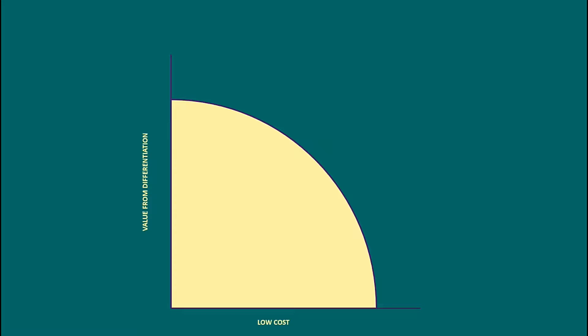As a company, you have to aim for the purple line — this is the efficiency frontier. You can be anywhere on the line, but you have to be on the line to be fully efficient. You can be positioned low or high — that does not matter. Customers will overlook added value if the price is really low, and customers will be willing to pay a premium price if you add a lot of value through differentiation.